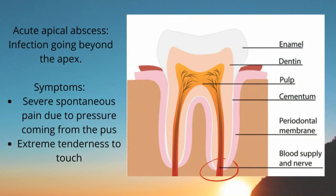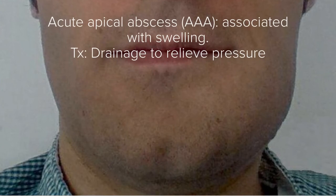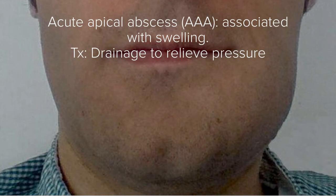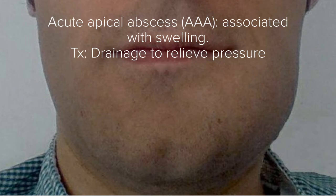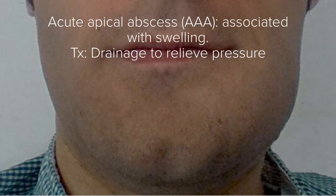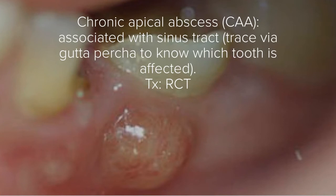Another diagnosis is acute apical abscess, where infection goes beyond the apex. The patient will experience severe spontaneous pain due to pressure from the pus, and extreme tenderness to palpation or percussion. Acute apical abscess is associated with swelling, and the treatment will be drainage to relieve the pressure, since the pus is pressing on the bone and causing severe pain.